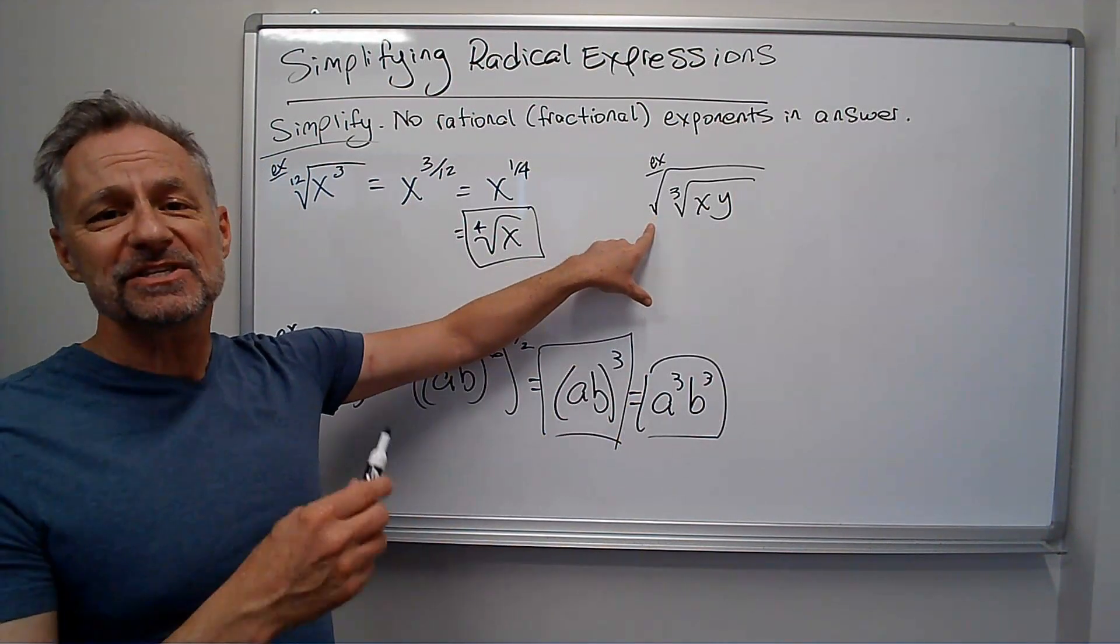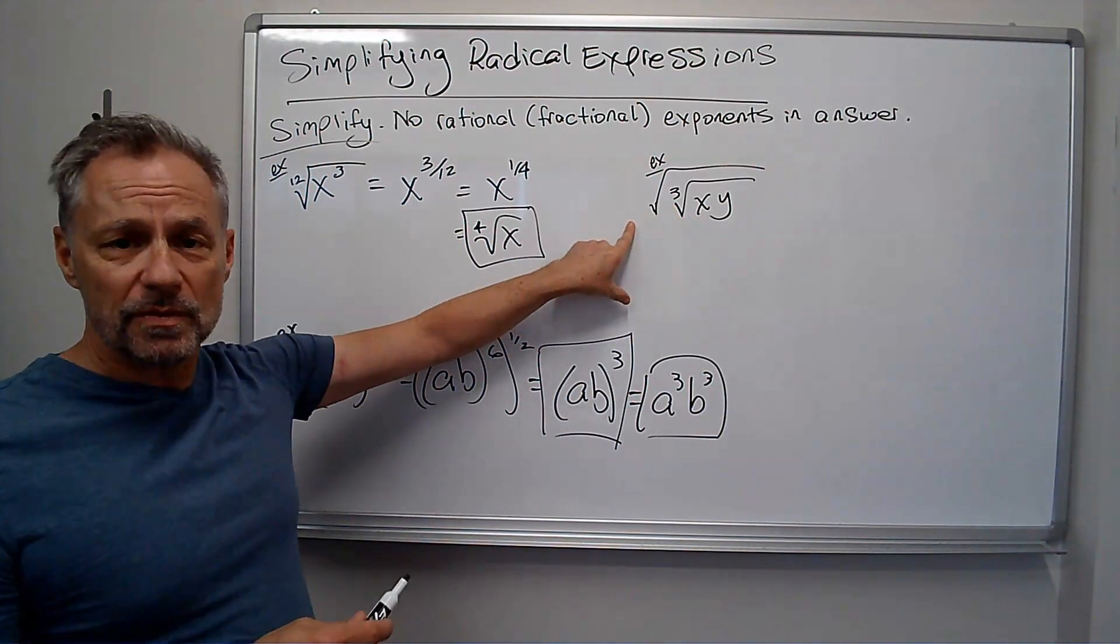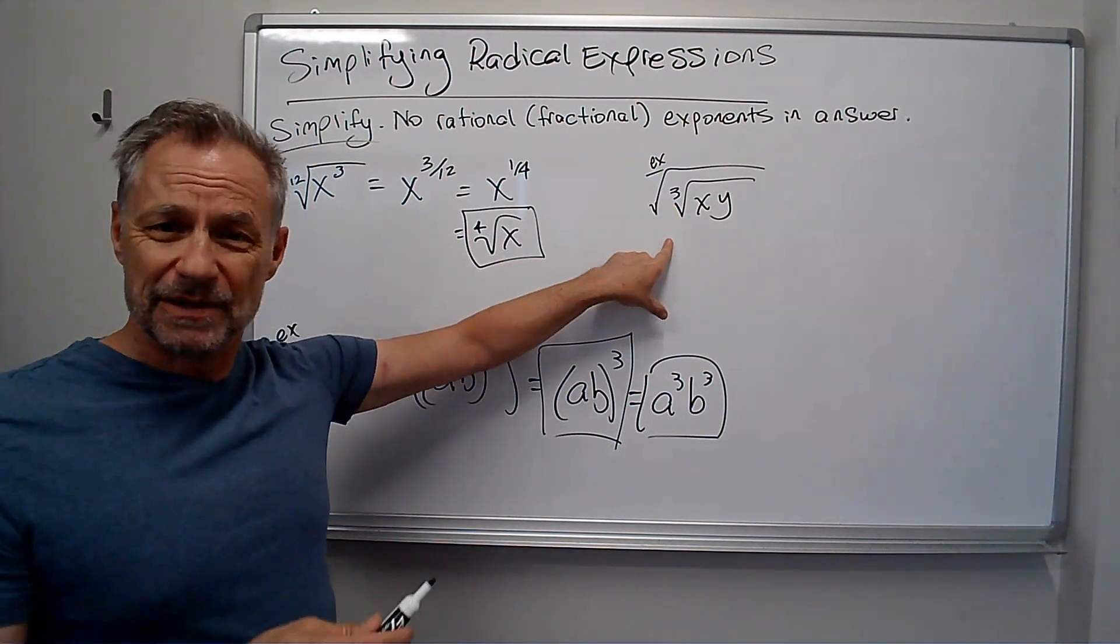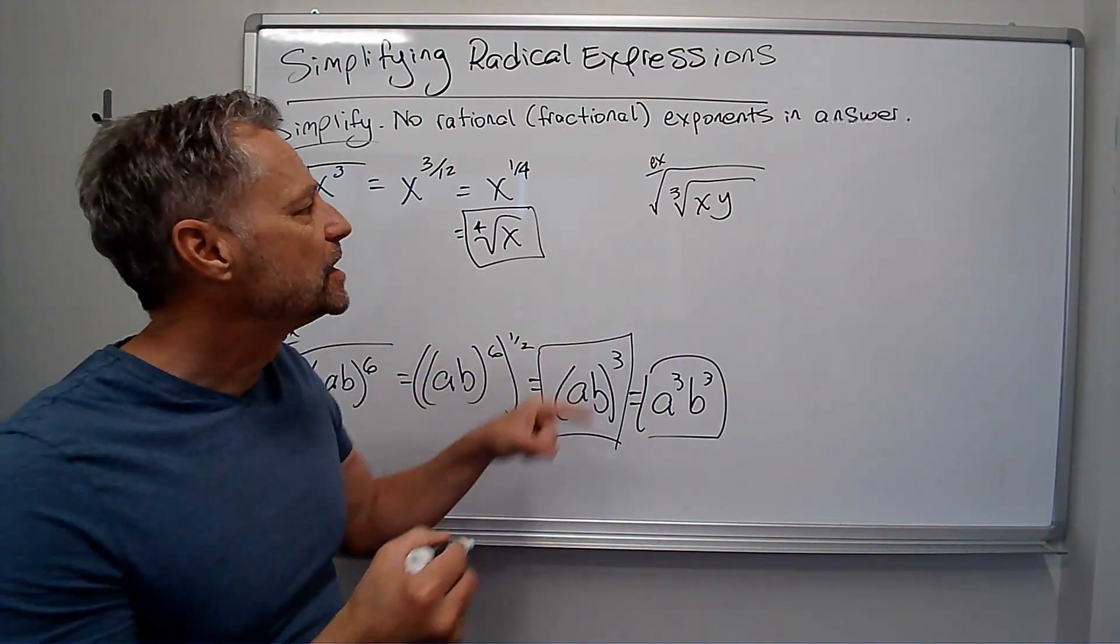And what's this craziness? We've got the cubed root of xy, but the square root. So the square root of the cubed root. Can we do that? Well, we can if we use rational exponents.